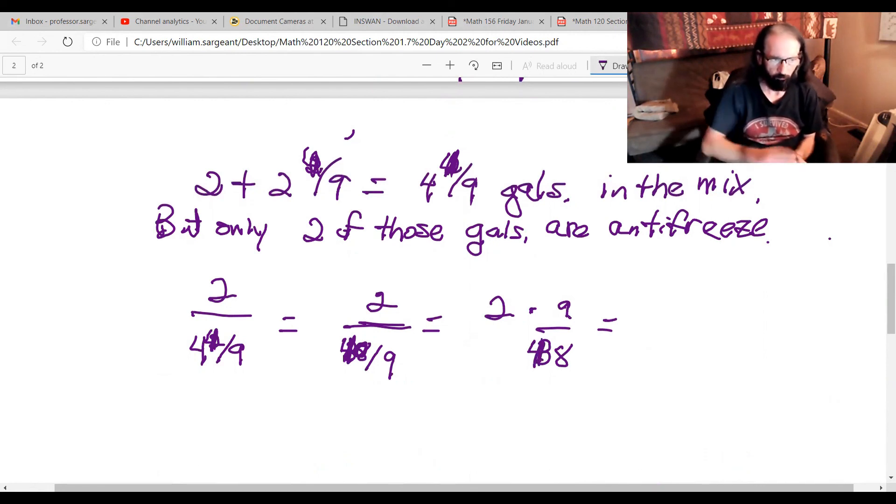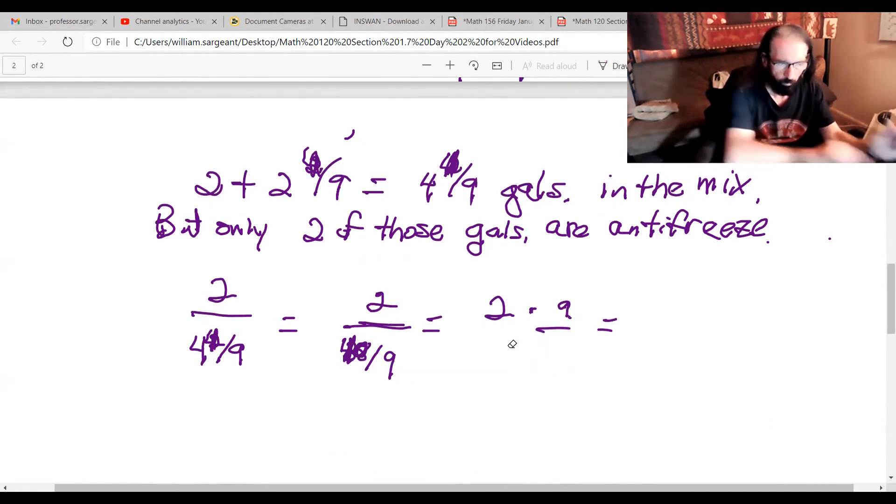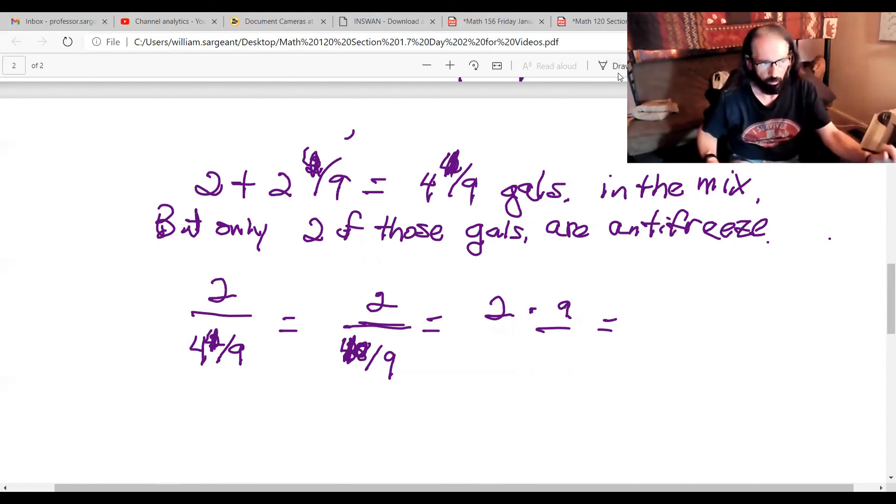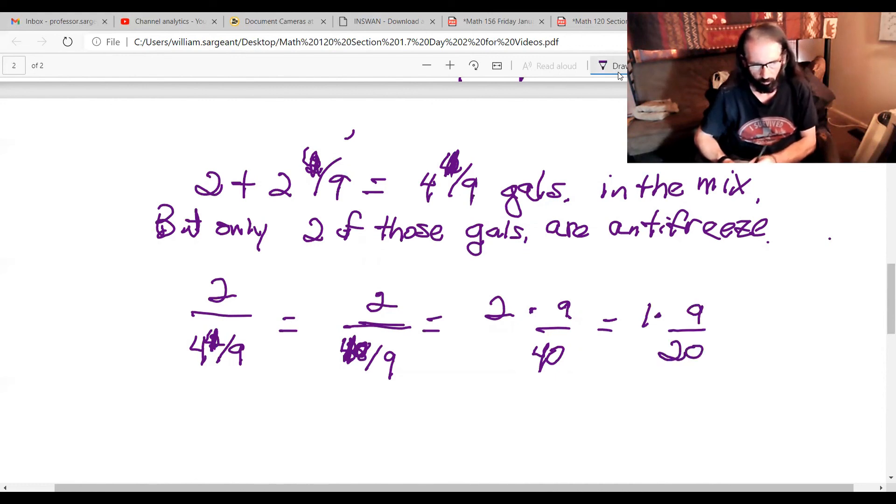So two divided by 40 ninths is going to be two times nine over 40. And I could reduce two into itself and into the 40. Now multiply, find out what that is as a decimal, and it is 0.45, i.e. 45 percent.